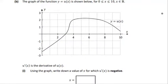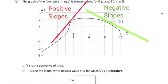On to part b now, and we need to interpret this carefully. We have u dash as the derivative of u of x. Using the graph, write down a value where u dash of x is equal to a negative value. So where are the tangents going to be negative? On the left we're going upwards, so the slopes will be positive. On the right we're going downwards, therefore the slopes will be negative.